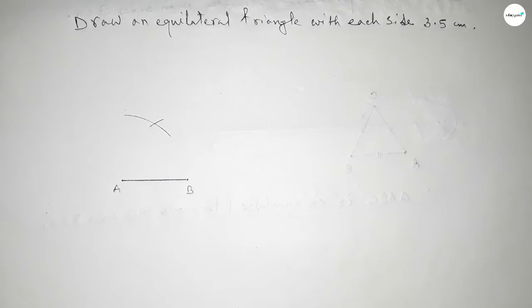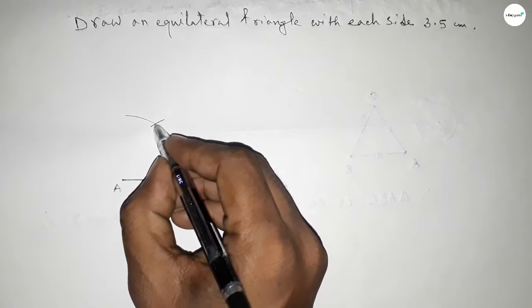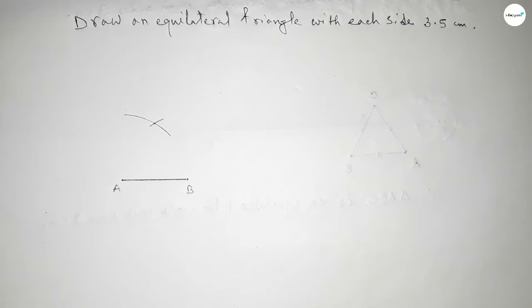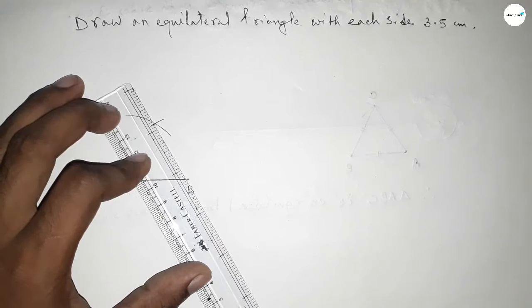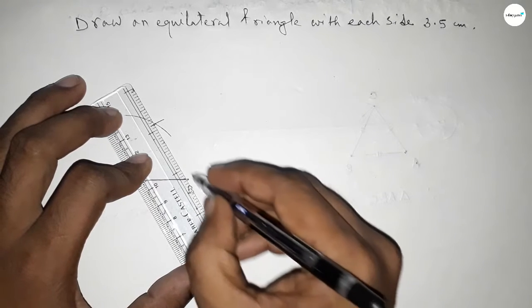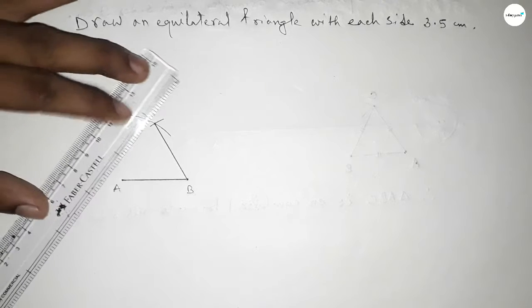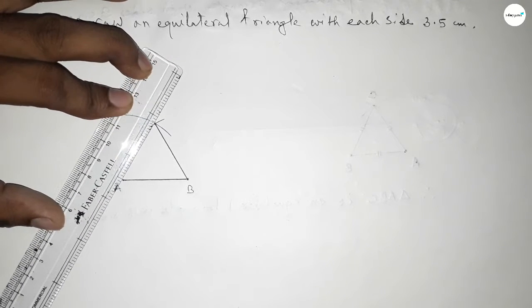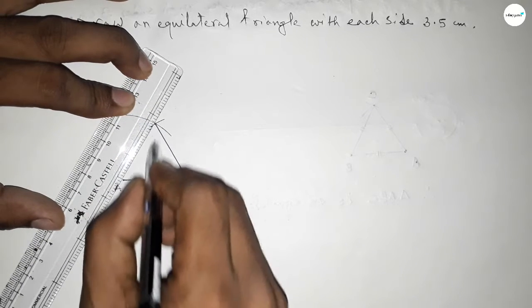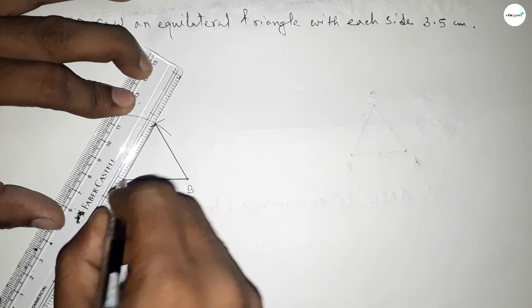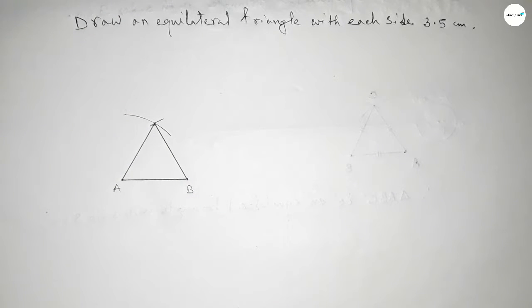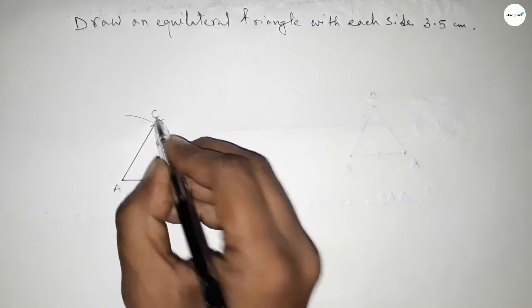So now both curves intersect at a point. Now joining this side and joining this side to get an equilateral triangle with each side 3.5 centimeter. So this is C point.